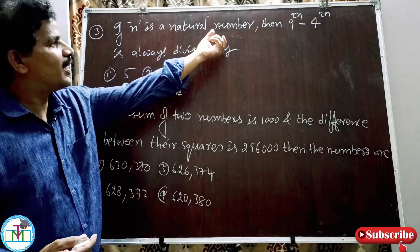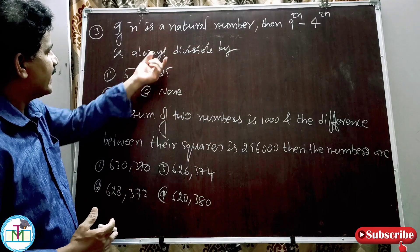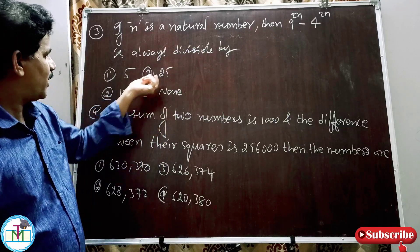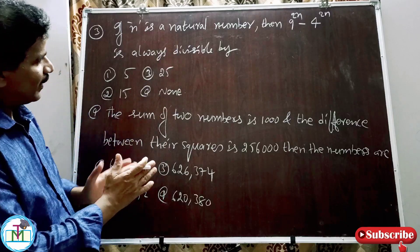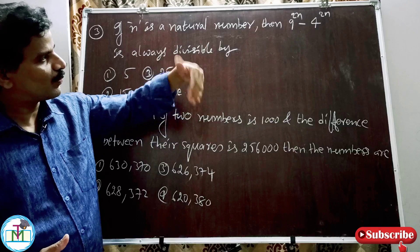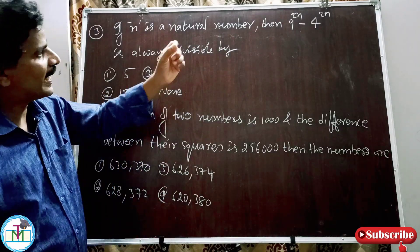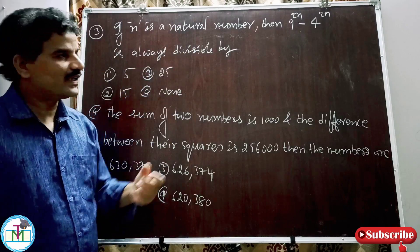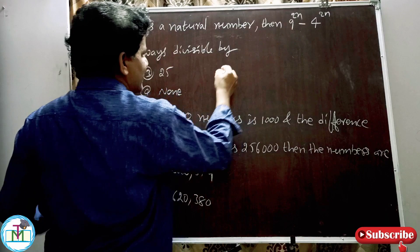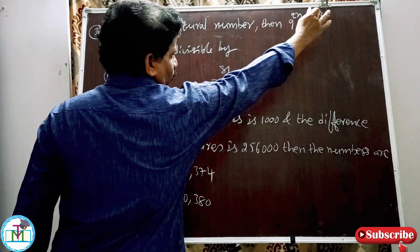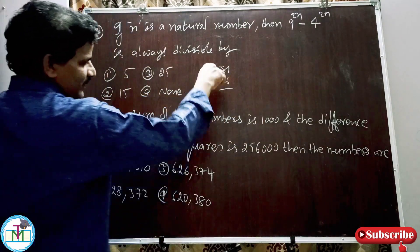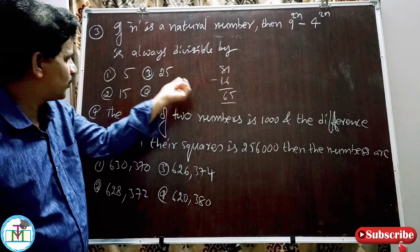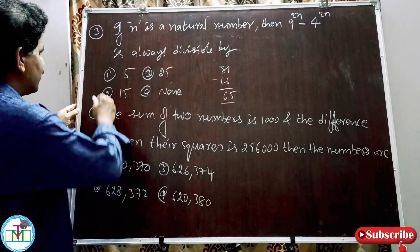Question number 3: If N is a natural number, then 9^(2N) − 4^(2N) is always divisible by which number? Options: (1) 5, (2) 15, (3) 25, (4) none. For expressions of this type, substitute N=1: 9²−4² = 81−16 = 65. 65 is divisible by 5. Therefore option 1 is the right answer.